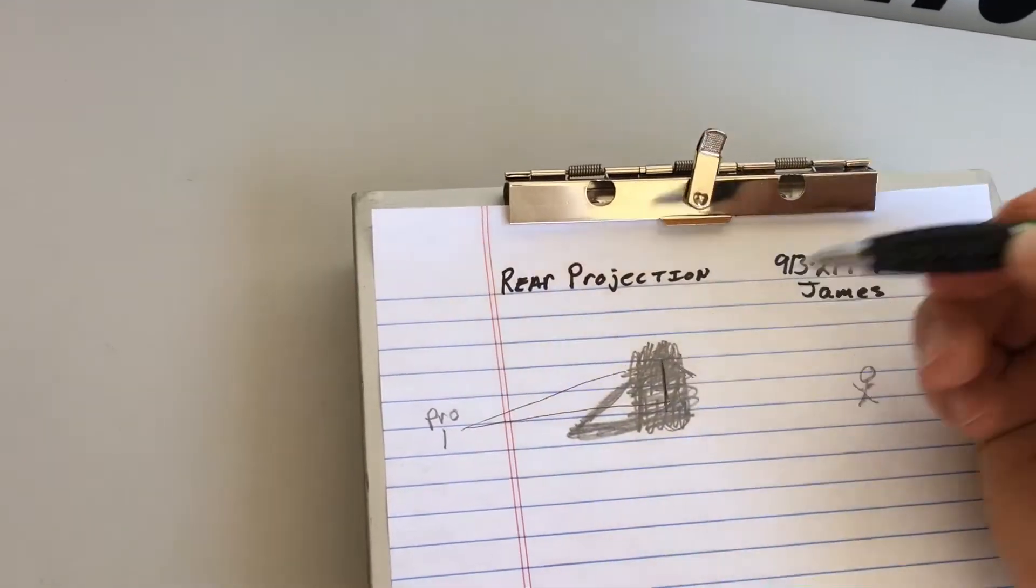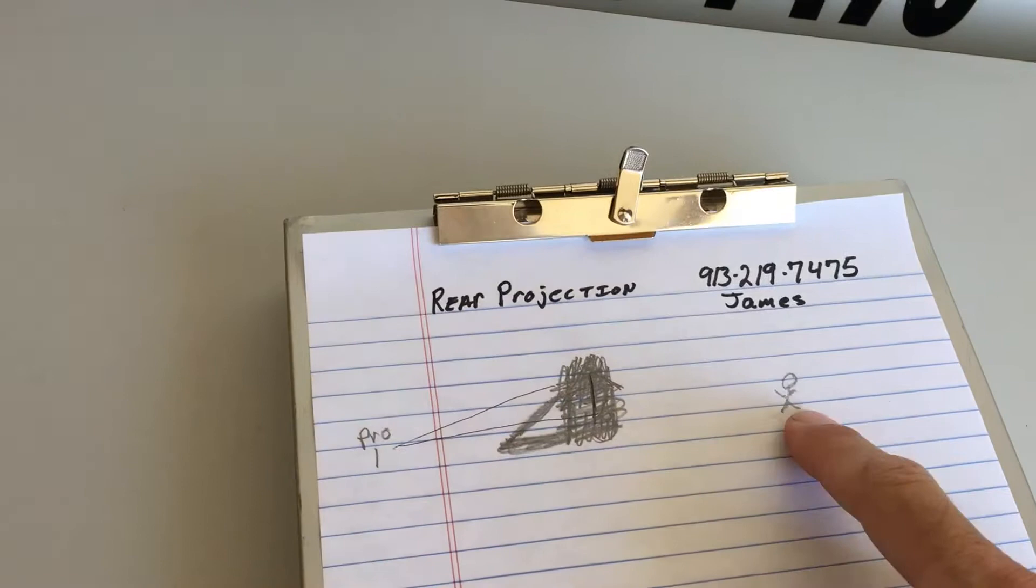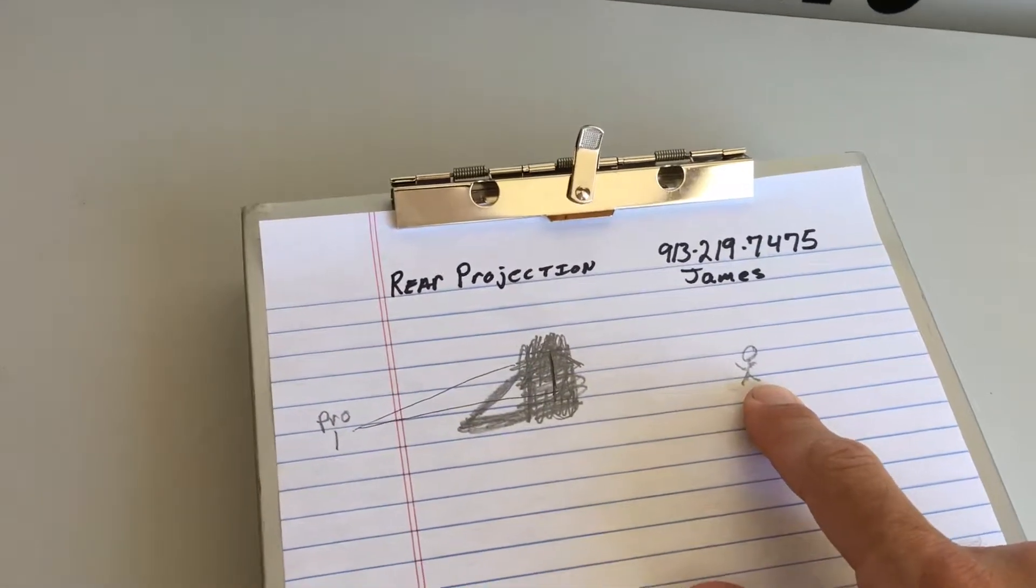The screen is kind of suspended here in the middle. And it's backwards to you if you're standing back here, but it's not backwards to them. It's perfect. It's like a mirror image.